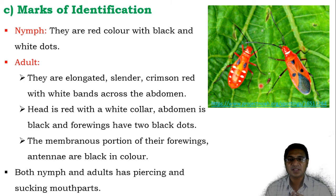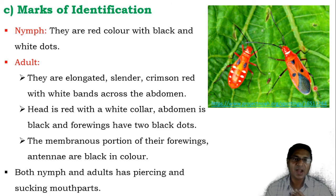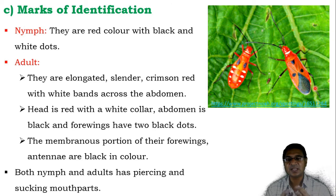The membranous portion of the forewings and the antennae are black in color. The terminal part of the forewing is also black. Both nymphs and adults suck the sap of the plant, and for sucking, a special modification of the mouth parts is present — the piercing and sucking type of mouth parts.